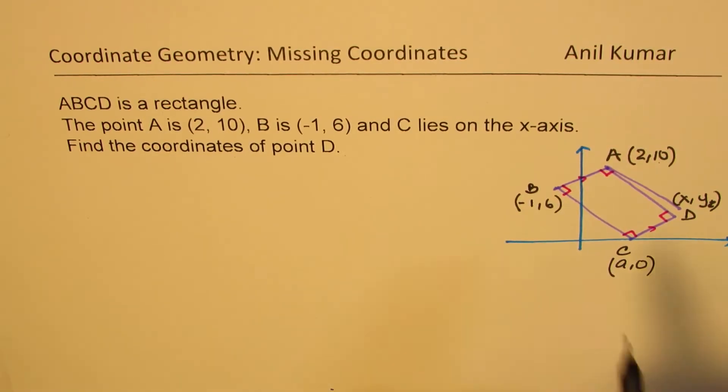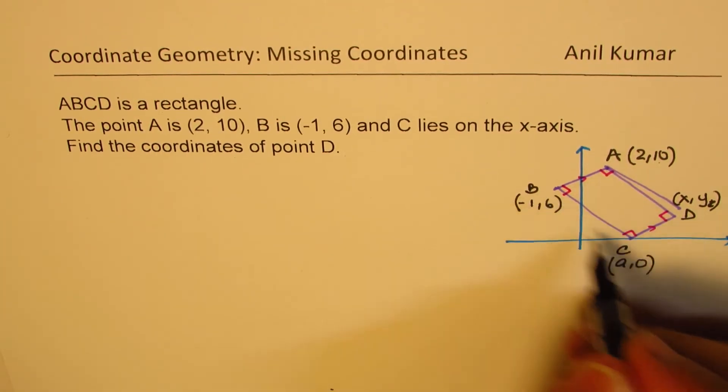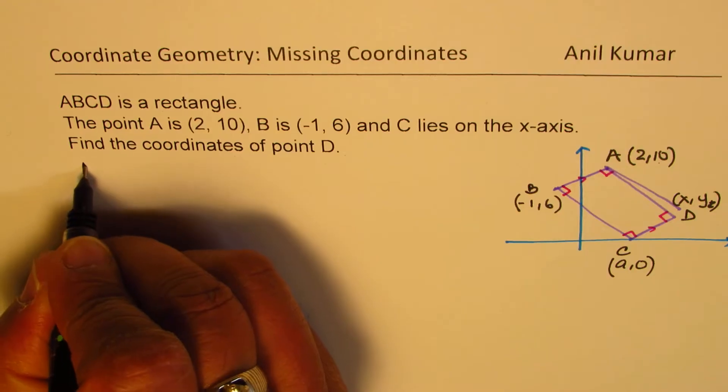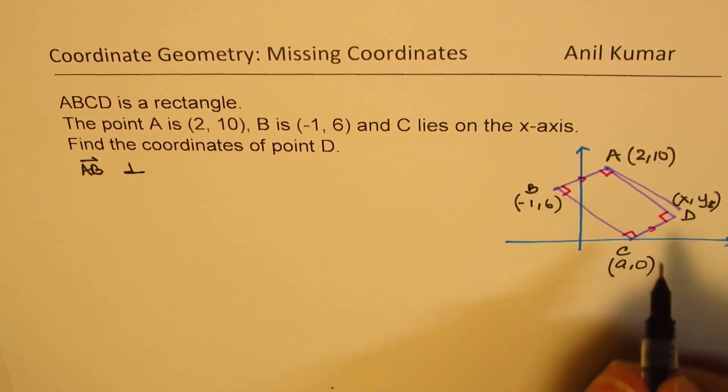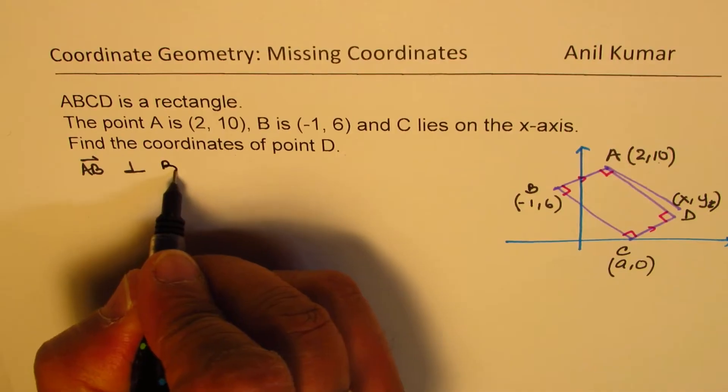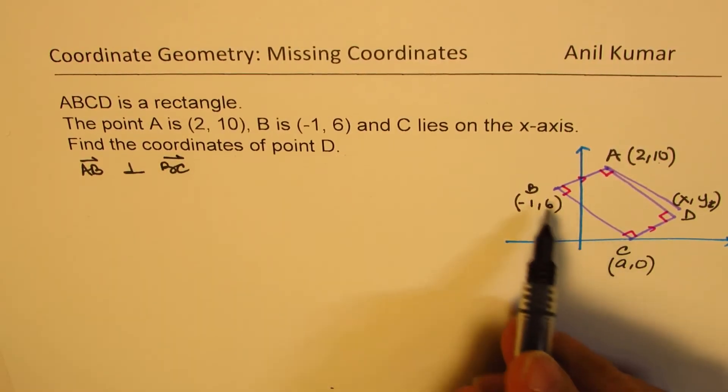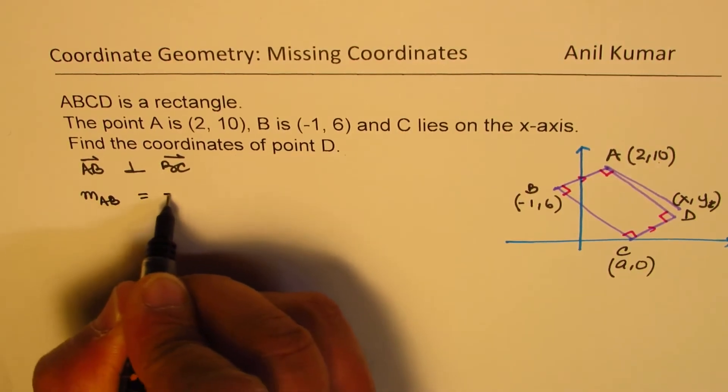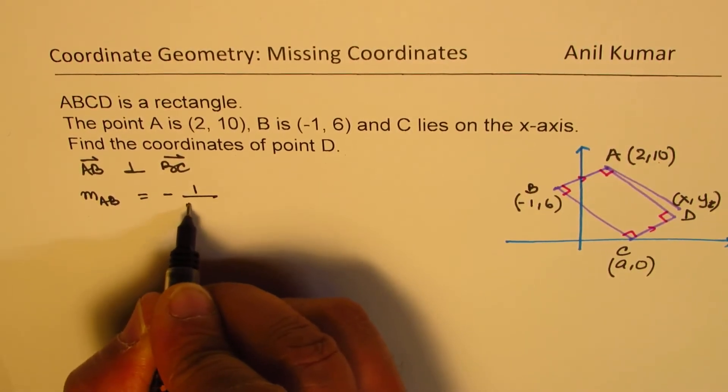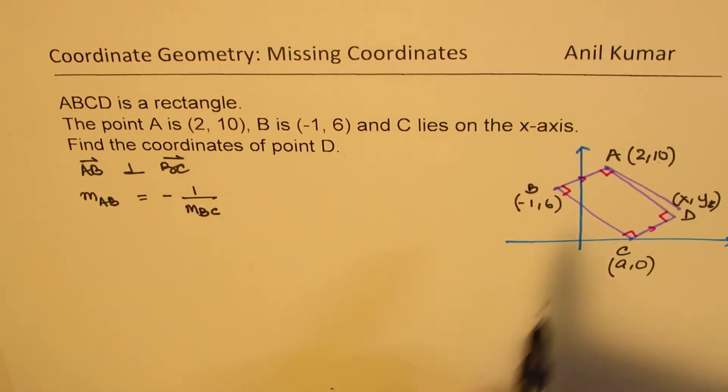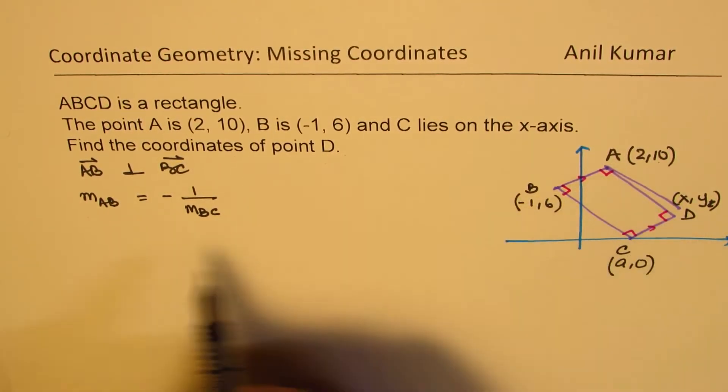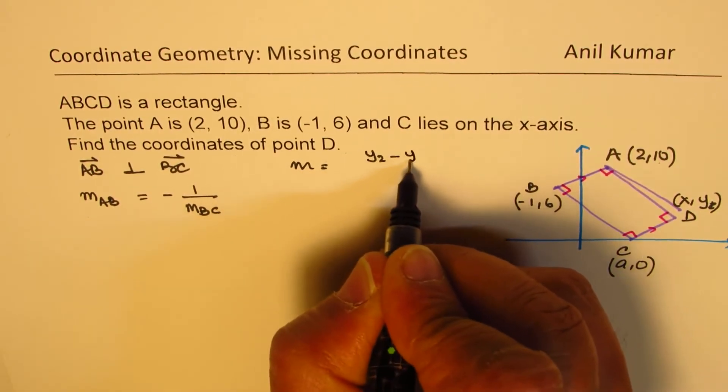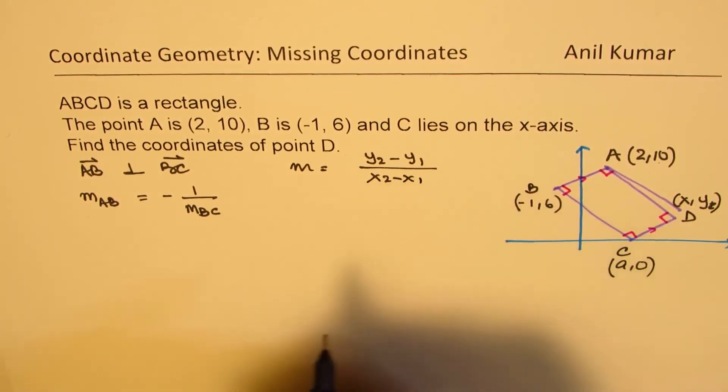Now we know that AB is perpendicular to BC. So the line AB is perpendicular to BC, and that really means that the slope of AB will be negative reciprocal slope of BC. So slope of AB is, slope in general M is (y2 - y1) over (x2 - x1).